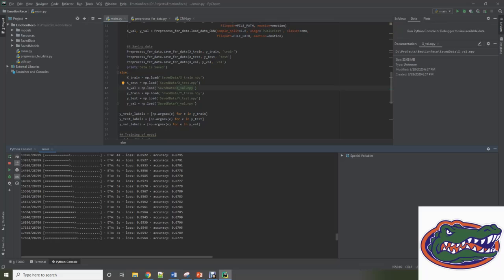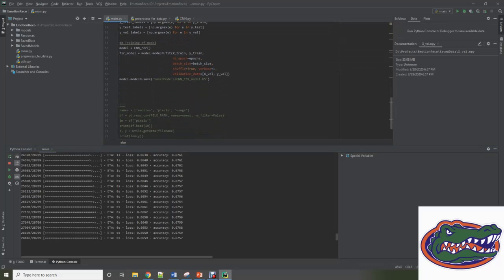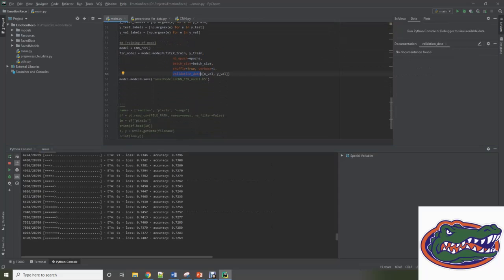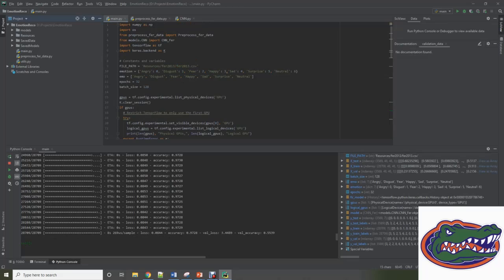One important thing to mention is we are putting validation data with the training side, so that with each epoch, the model compares the training dataset with validation too, to give this accuracy. As you can see, the model has finished training and we got final loss of 0.0844 with accuracy of 0.9728. This accuracy is based on the training dataset. We have also found parameters of validation losses and validation accuracy.